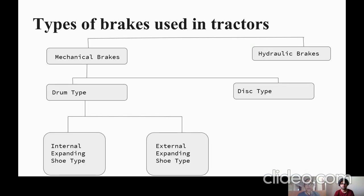There are two types of brakes used in tractors: mechanical brakes and hydraulic brakes. Mechanical brakes are further divided into drum type and disc type. Drum type brakes are of two kinds: internal expanding shoe type and external contracting shoe type.